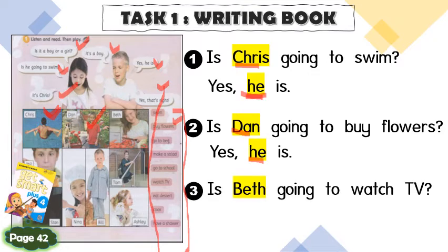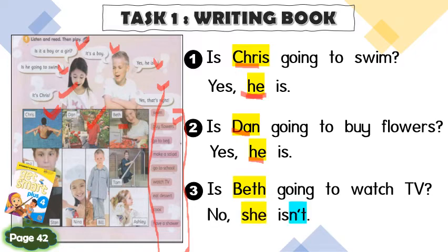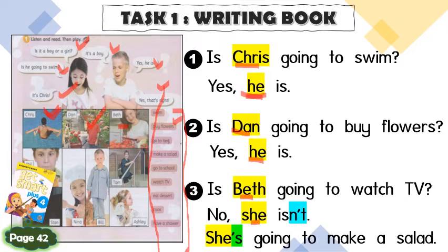What about number three? Beth — 'Is Beth going to watch TV?' It's up to you. If you choose the wrong verb, your answer should be 'No.' For example: 'Is Beth going to watch TV?' — 'No, she isn't.' Then how do you clarify it? 'She's going to make a salad.' So: 'No, she isn't. She's going to make a salad.'